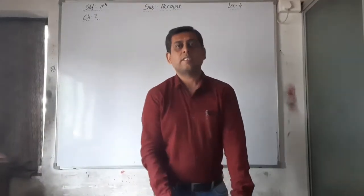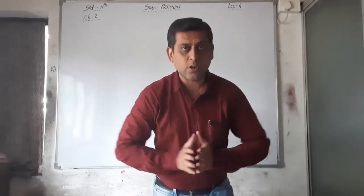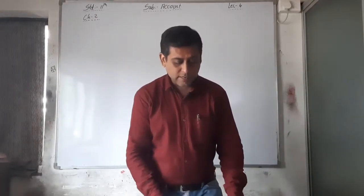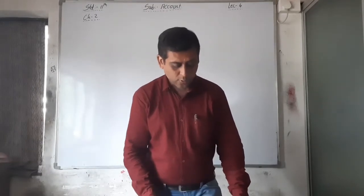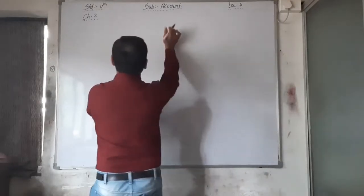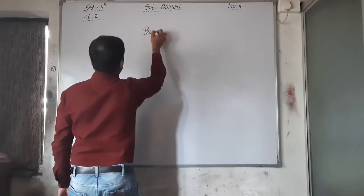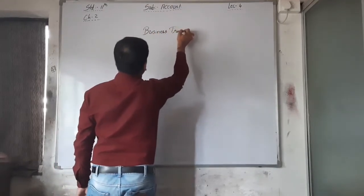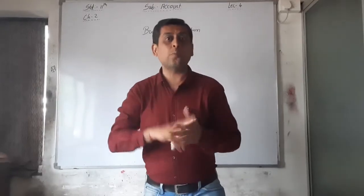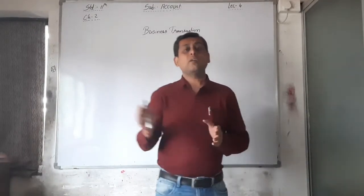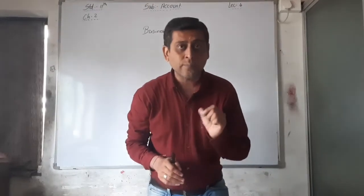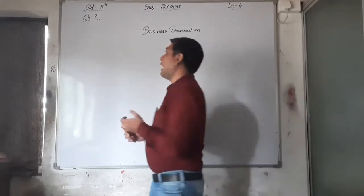Good morning students. This is your fourth lecture of chapter 2, Dual Effects of Accounts and Types of Accounts. We completed up to illustration number 4 in our last lecture, but here I am giving a small brief of the chapter. Business transactions means transactions in which two persons minimum exchange goods, services, and cash — if measured in money, it is a business transaction.